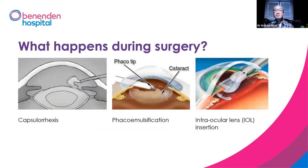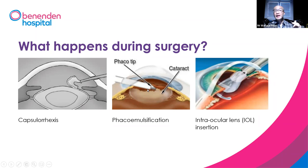These are some of the diagrams of the cataract surgery. As mentioned, capsulorrhexis is peeling off the very superficial part of the capsule which the cataract sits in. That's how we get into it using an ultrasonic needle to break it. Once it's all clear, we put the lens implant inside the eye.